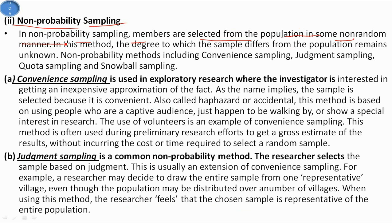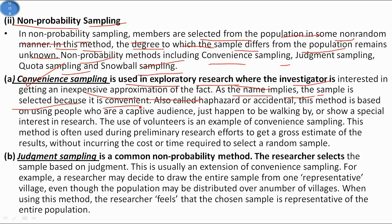In non-probability sampling, members are selected from the population in some non-random manner, meaning the degree to which the sample differs from the population remains unknown. Convenience sampling is used in exploratory research where the investigator is interested in getting an inexpensive approximation of the facts. As the name implies, the sample is selected because it is convenient — also called haphazard or accidental sampling. This method is based on using people who are a captive audience, happen to be walking by, or show a special interest in research. The use of volunteers is an example of convenience sampling.